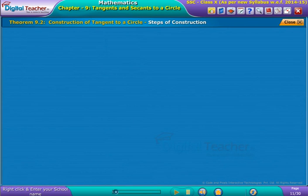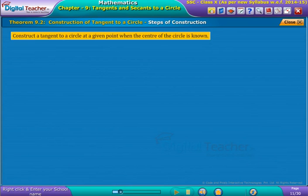Before following the steps once again, observe the construction concept: construct a tangent to a circle at a given point when the center of the circle is known. Now follow the steps of construction.